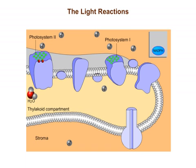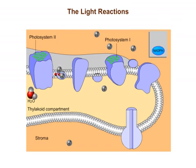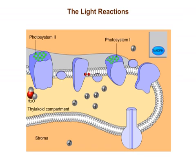Meanwhile, energized electrons from photosystem II are passed through another electron transport chain. Their energy is used to pump hydrogen ions, H+, from the stroma into the thylakoid compartment, creating a concentration gradient.